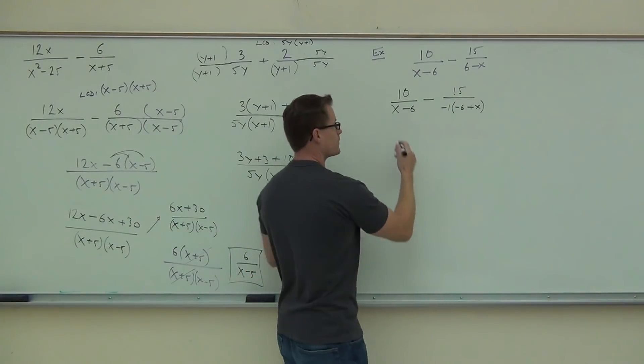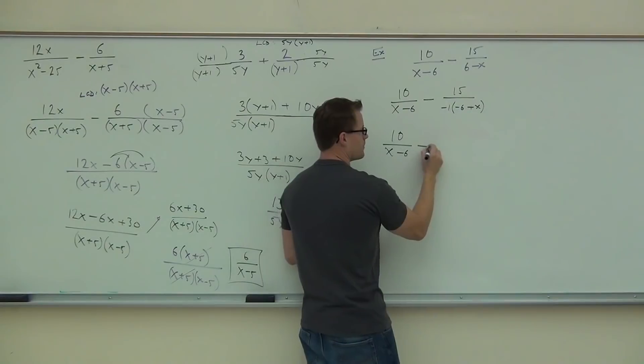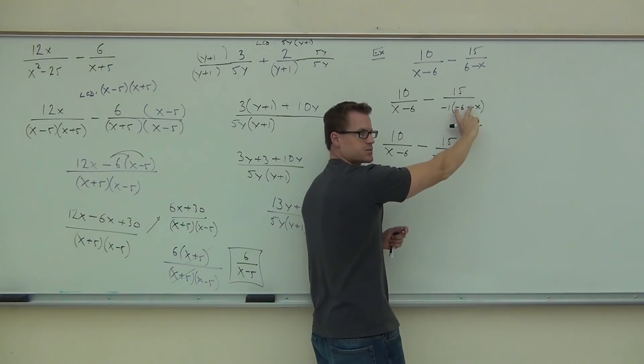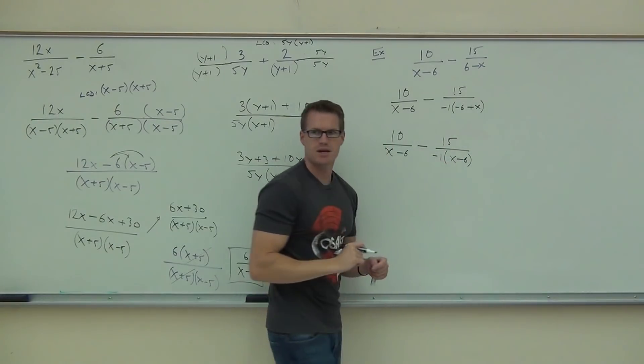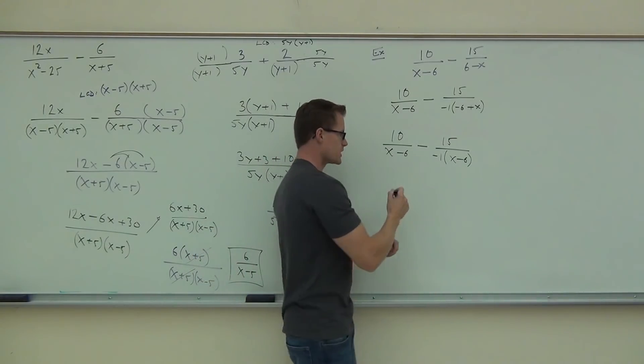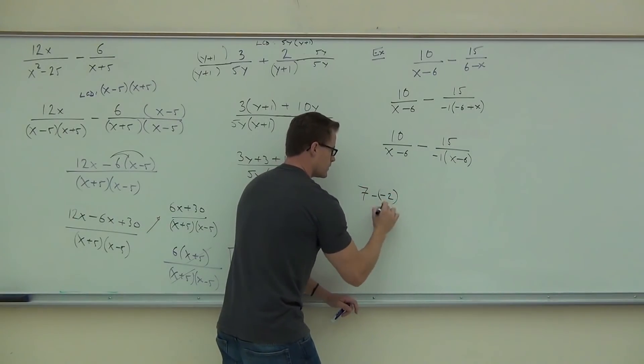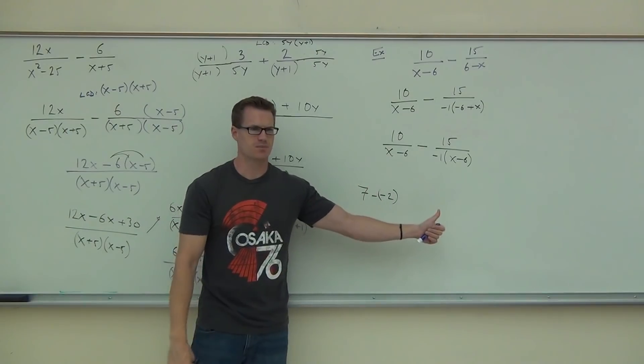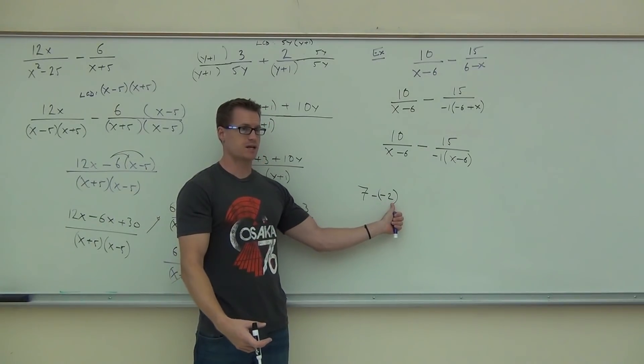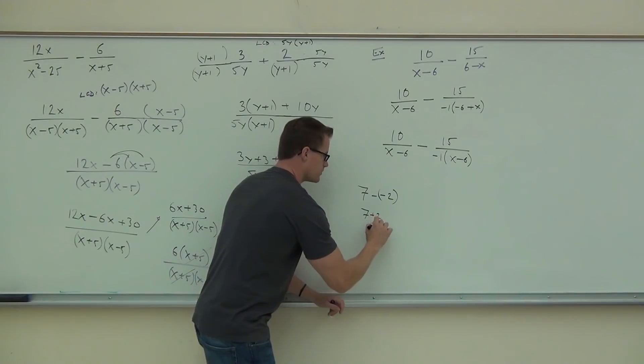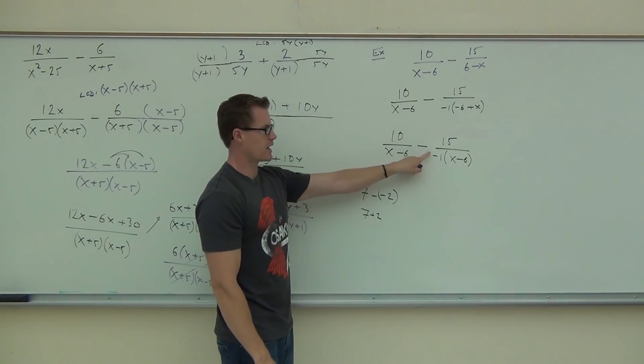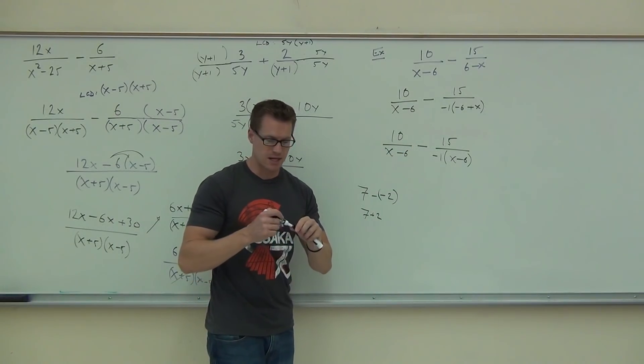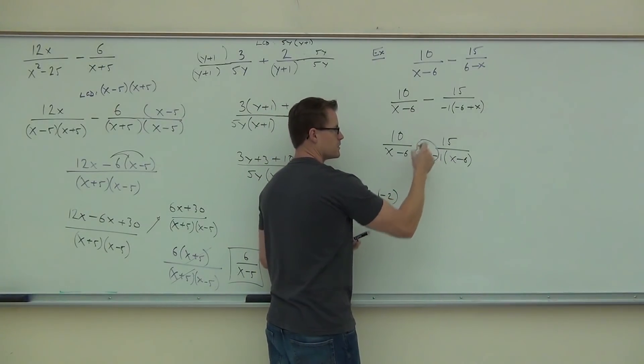If we keep going, we have 10 over x minus 6 minus 15 over negative 1 times. I'm going to switch those around. I've done that a couple times also. Instead of negative 6 plus x, I'm going to get x minus 6. We've seen that before too, right? Now, here's the cool part. Just like you have an example like this. 7 minus negative 2. What does 7 minus negative 2 really mean? 7 plus 2. Good, because you're really taking away a debt or you're adding. Like if I took away your debt, it's like I'm giving you money, right? I'm taking away, subtracting a negative number. I'm actually adding to it. So, this becomes 7 plus 2. Same thing happens here. You are subtracting a negative. This negative doesn't have to necessarily be on the denominator. It could be here or in the middle or in the top. It doesn't really matter. So, we have subtracting a negative. These two signs are going to become what? Positive.